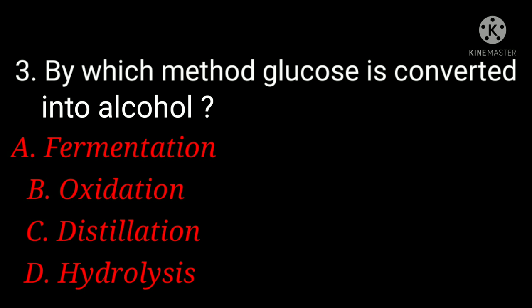By which method is glucose converted into alcohol? A. Fermentation, B. oxidation, C. distillation, D. hydrolysis. And the answer is A, fermentation.